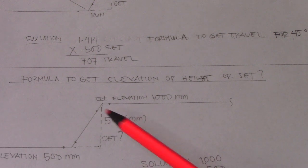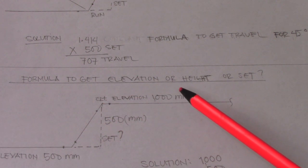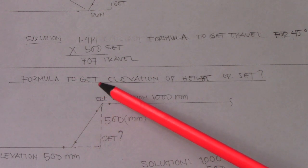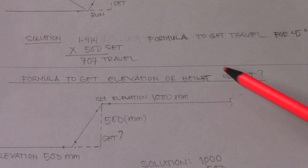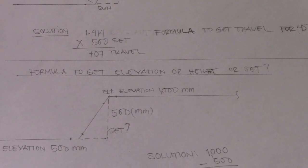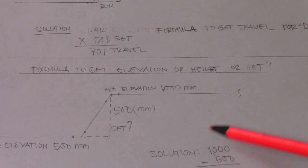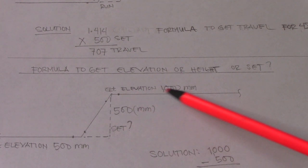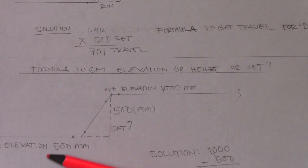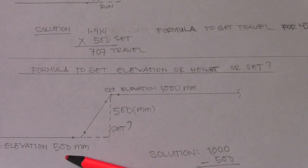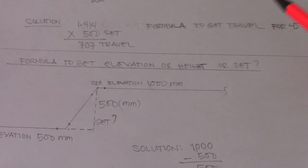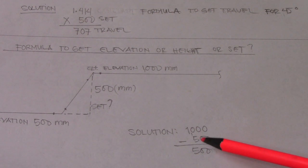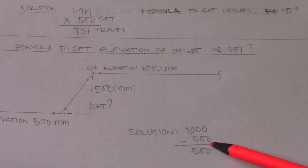Next is the formula to get elevation, height, or set. This is example number two. The topic is finding the elevation or set. We have a given elevation of 1000 and another elevation of 500.